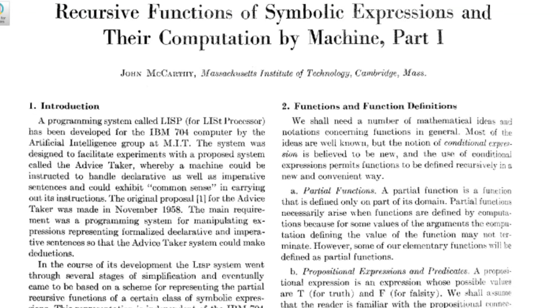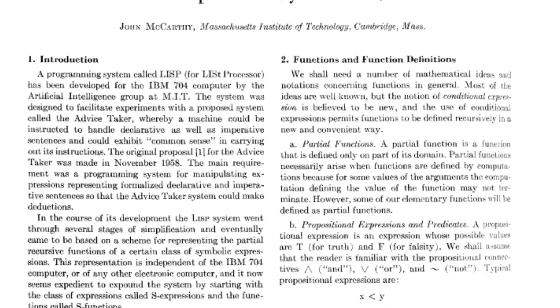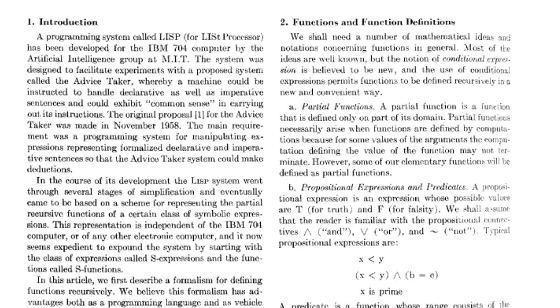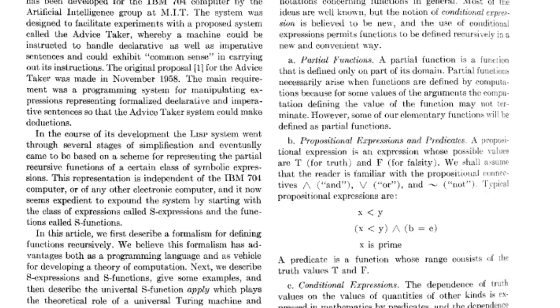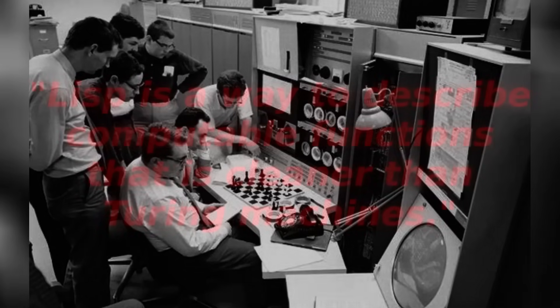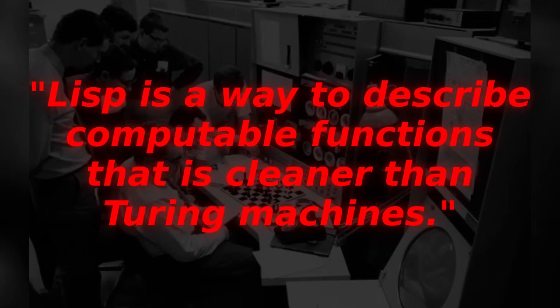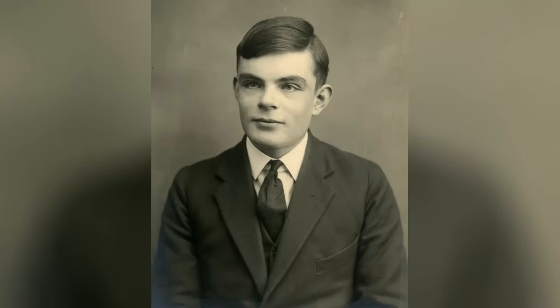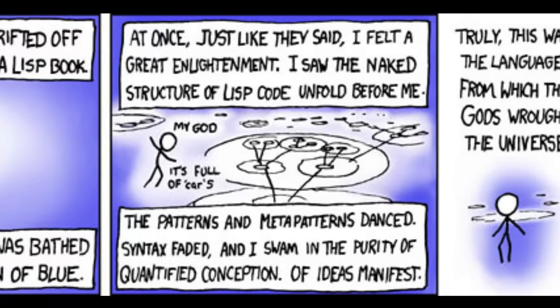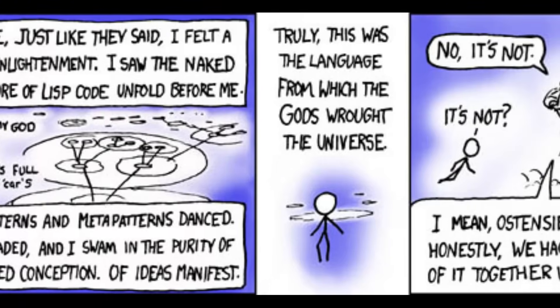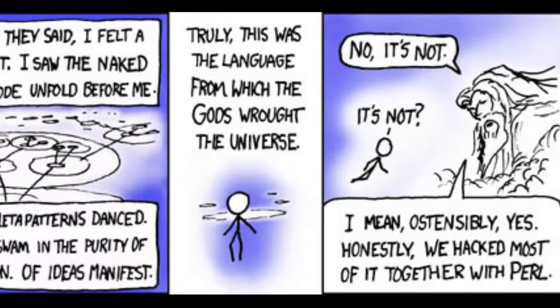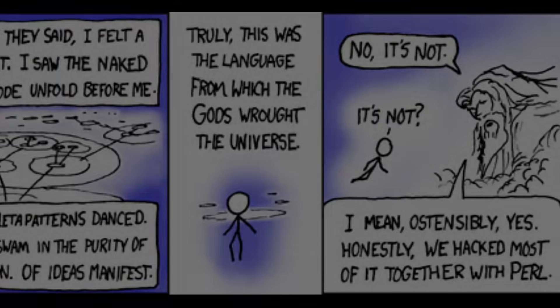In 1960, McCarthy finally published the now-famous paper that introduced Lisp to the world. In that original publication, McCarthy already sensed that what he had created was more than a programming language — he realized that Lisp was an elegant mathematical system, something deeper and more universal. He would later write: "Lisp is a way to describe computable functions that is cleaner than Turing machines." McCarthy had, in many respects, gone beyond Alan Turing's formalism. Paul Graham would later say that what McCarthy did for programming is similar to what Euclid did for geometry. McCarthy axiomatized computation, and he did it in a beautiful way. But what is it that gives Lisp its aura, and why isn't it the only programming language in use today?